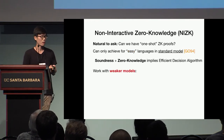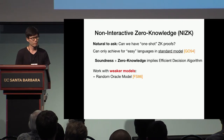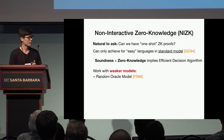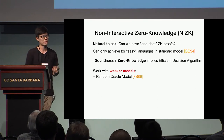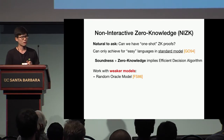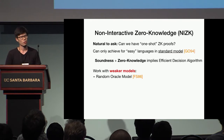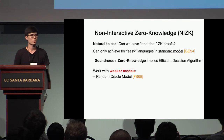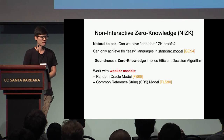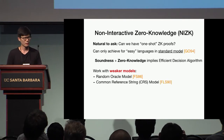So what we generally do is work in weaker security models. A very popular model is the random oracle model, and in fact in this model we know of many nice techniques for constructing NIZK from a variety of different assumptions. However, in this work we'll focus on constructing NIZK without relying on random oracles. The gold standard in this case is to work in the common reference string model, or the CRS model.